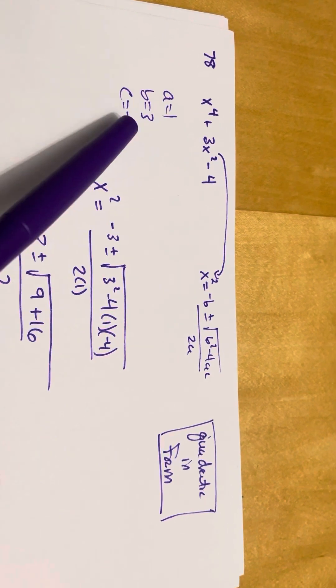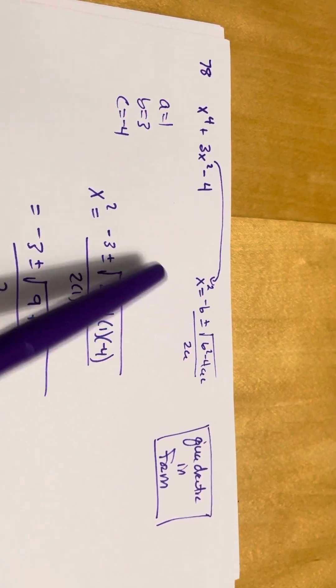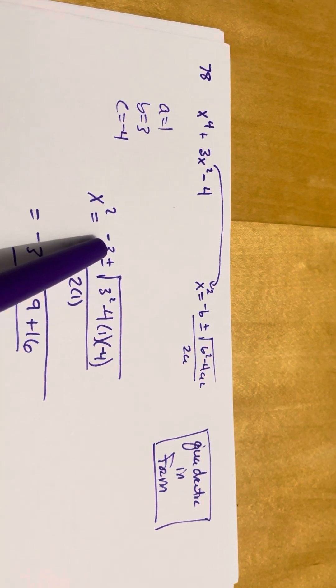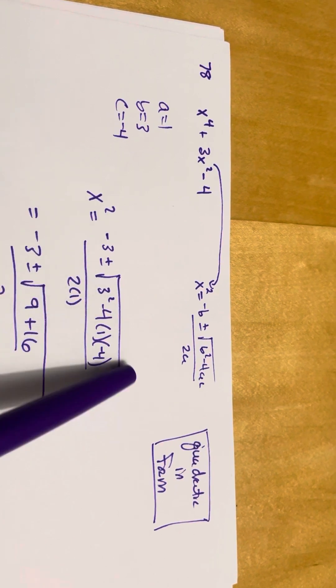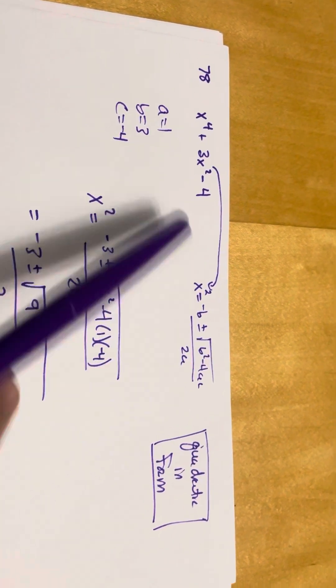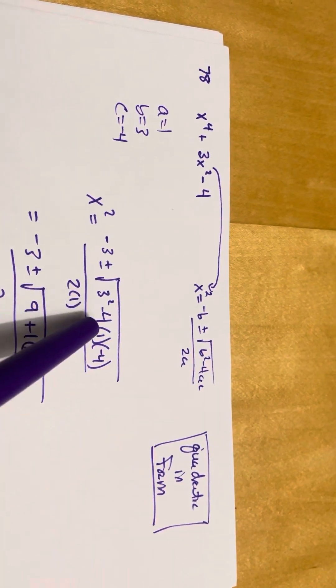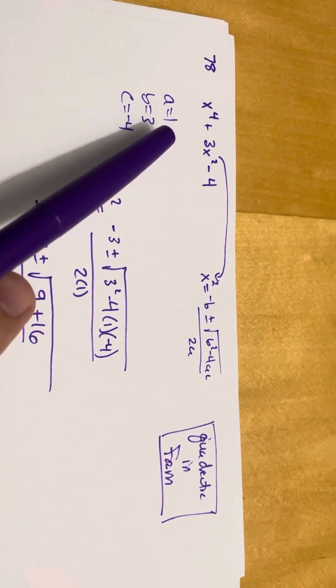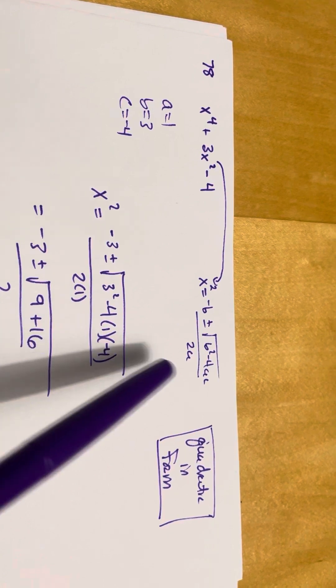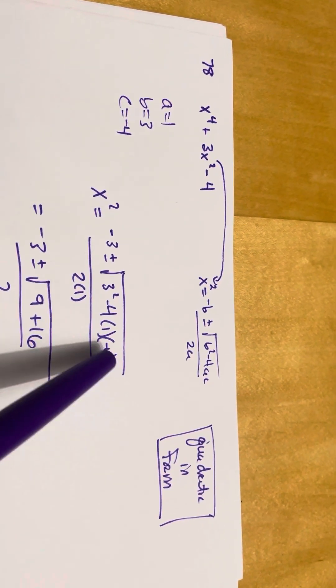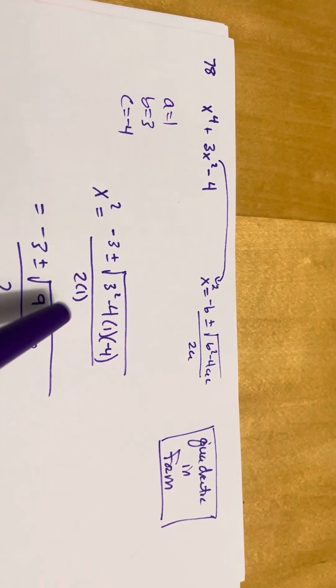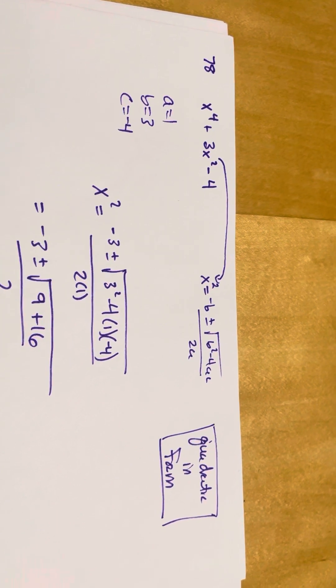So, our b is positive 3. And because the negative is in the formula, we have negative 3. Plus or minus the square root of... Now, b is 3, so it's going to be 3 squared. Minus 4 is part of the formula. And we put the a, which is 1. And we put the c, which is negative 4, in these two spots. Then you also have 2 times a in the denominator.